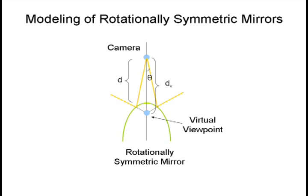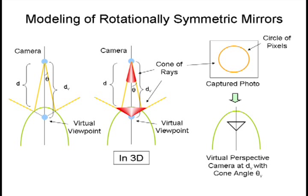Now we describe our modeling of rotationally symmetric mirrors using axial cone cameras. Consider a pinhole camera placed at the mirror axis and two rays subtending the same angle theta from the vertical. Since the mirror is rotationally symmetric, these rays will intersect at a point on the axis after reflection.